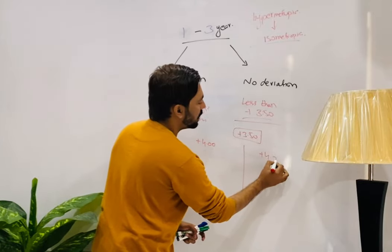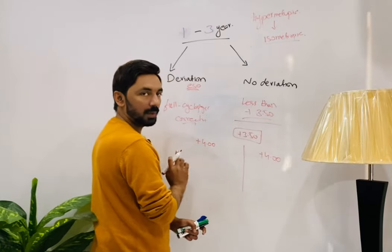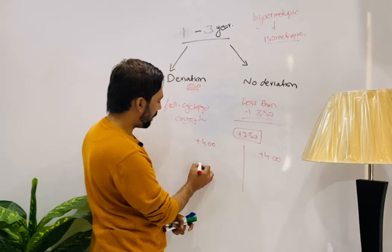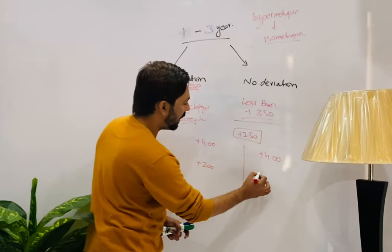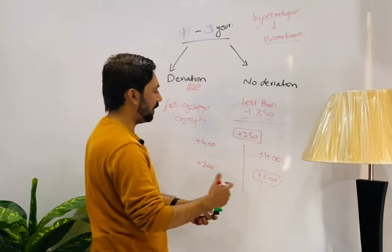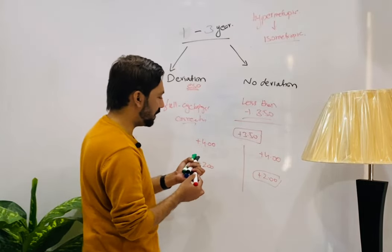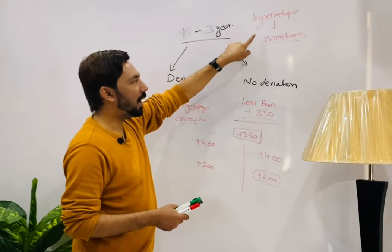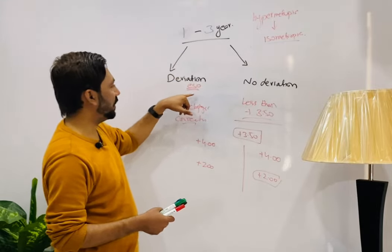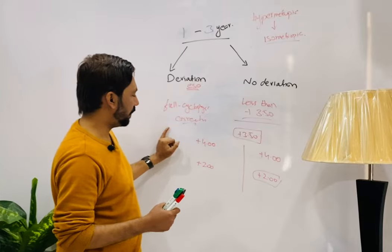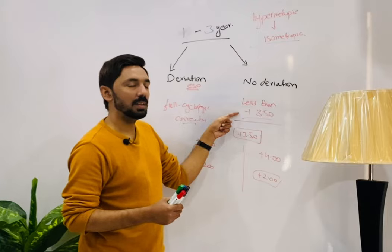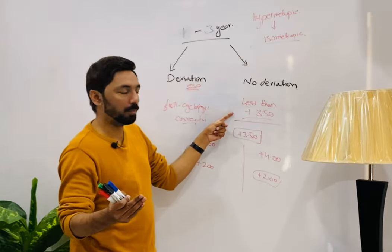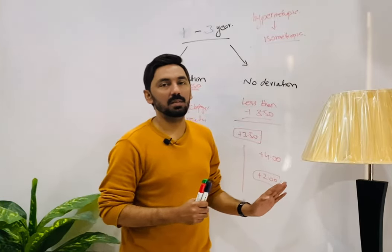If the prescription is more than plus 3.5 diopters in isometropic hypermetropia with no deviation — for example, plus four in both eyes — we prescribe partial correction, approximately two-thirds, which could be plus two or more or less in each eye. Again: one-to-three years, isometropic, deviation present prescribes full cycloplegic correction; no deviation and less than 3.5 means no prescription; more than 3.5 means partial correction.